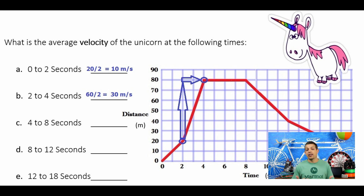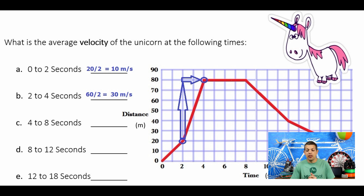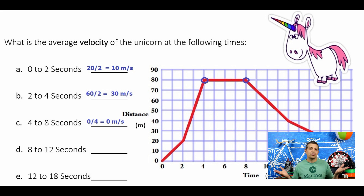If you understand what's happening with slope or constant of proportionality on a velocity graph — distance over time — for 4 to 8 seconds there is no change in distance. You're at 80 meters and you stay there. So the velocity is 0 meters per second; the unicorn is stopped.